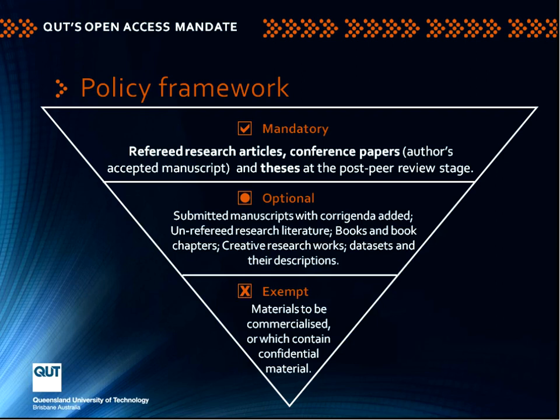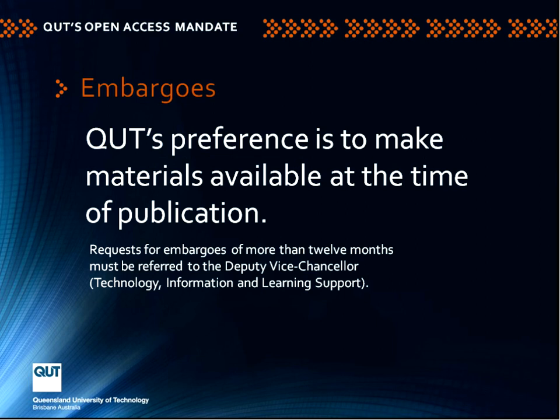The framework mandated — that is, said we must do this — with refereed research articles and conference papers. Some other categories of output were more optional, but it also made clear from the beginning that certain material was exempt: material to be commercialized, or containing confidential material that would breach a legal undertaking. Our preference is access at the time of publication, and we stipulate that requests for embargoes of greater than 12 months need to be referred to the Deputy Vice Chancellor responsible for the area.